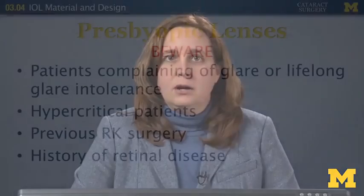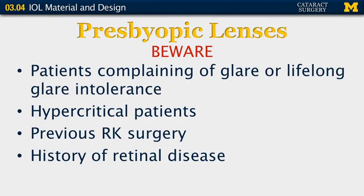In general, a surgeon needs to be very careful in selecting which patients to use any of these lenses in. The lenses in general may not provide quite as crisp and sharp vision as a traditional lens, and hypercritical patients may not appreciate some of the benefits while being more focused on the shortcomings. Because the first two multifocal lenses create a significant amount of glare, patients who present complaining about glare or a lifelong glare intolerance may not be happy with the residual glare experience. Patients with previous radial keratotomy surgery also already have significant glare, and this will be additive, and it can be harder to predict their postoperative refractive outcome. These lenses can also be more difficult to look through when examining patients with retinal disease, so one should be careful in selecting a lens for patients with potential for retinal disease.